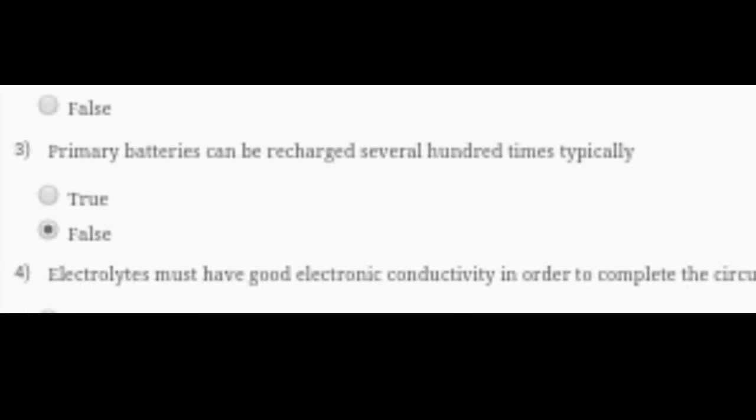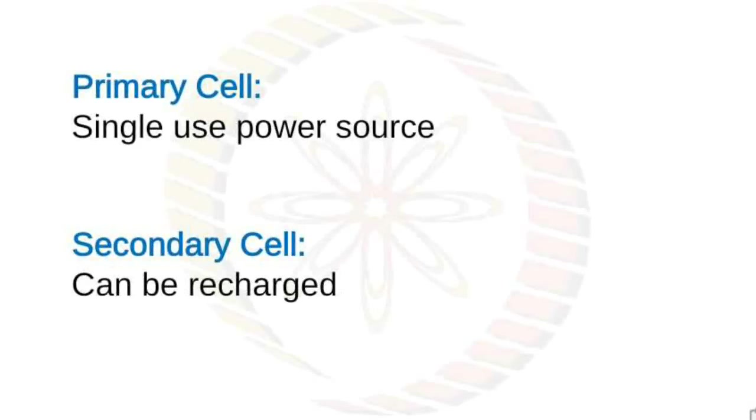Question 3: Primary batteries can be recharged several hundred times typically. This is absolutely False. You can see clearly it's written here that primary cells are single-use batteries - we cannot recharge them. So the answer is False.